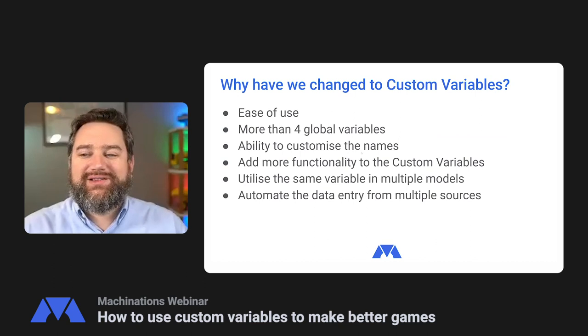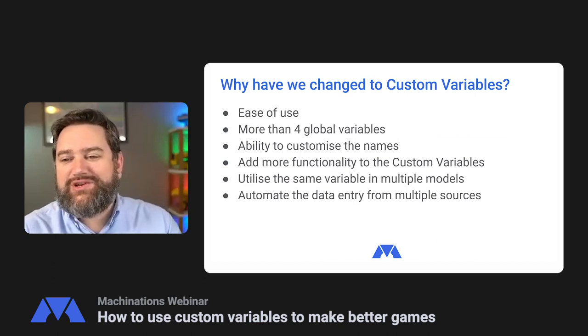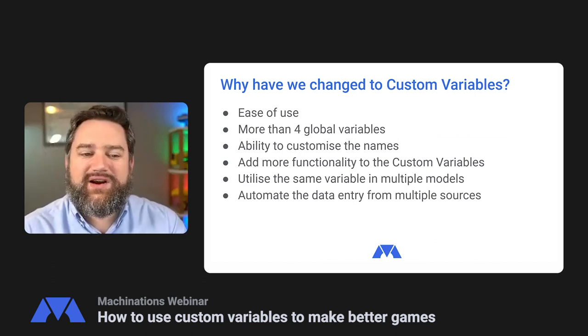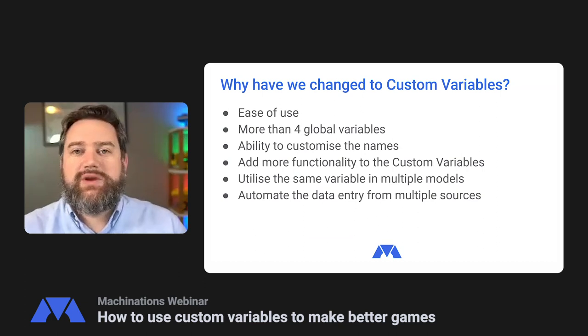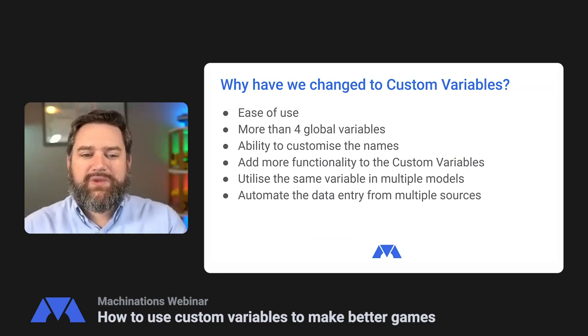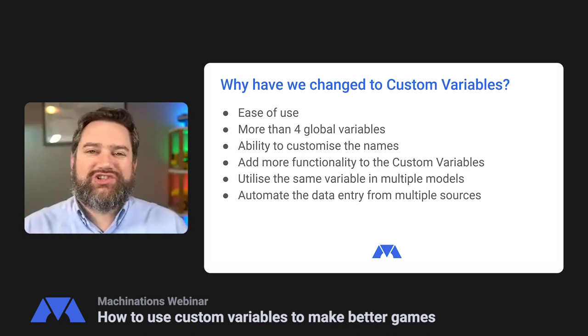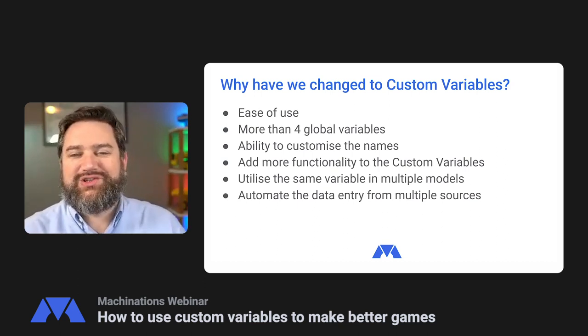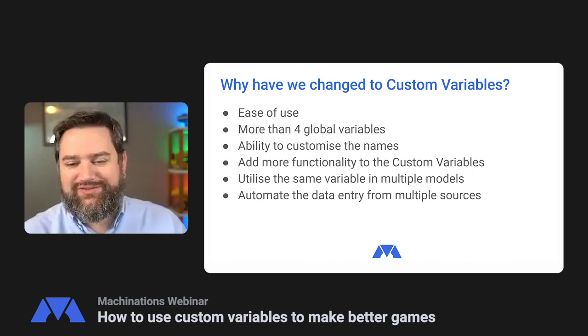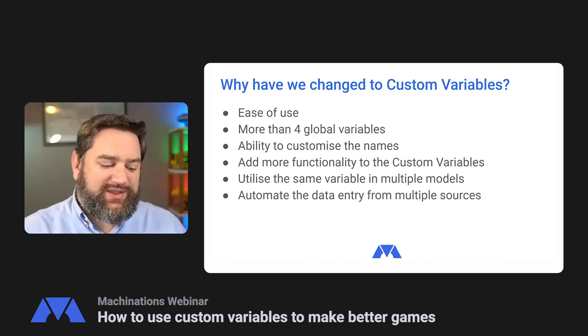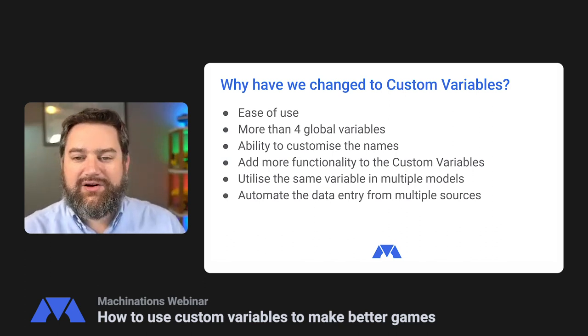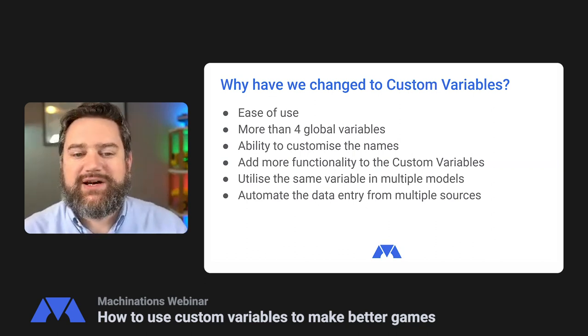Hope you will enjoy the webinar and I really hope you will learn something from it. Before we launch ourselves into Machinations — what have we changed? What are custom variables? For those of you that have been using Machinations for a while, we used to have global variables. There were only four of them. You couldn't change what letters were being used, you couldn't change the name of them. They were fairly limited, and it's been on our backlog to overhaul for quite some time.